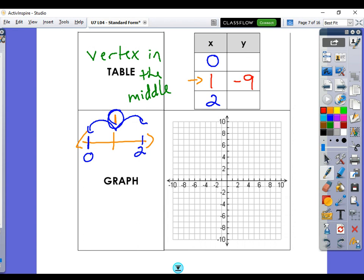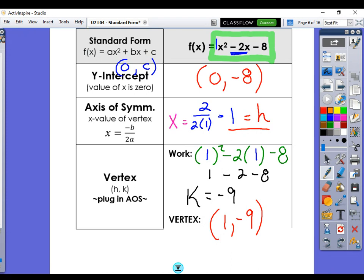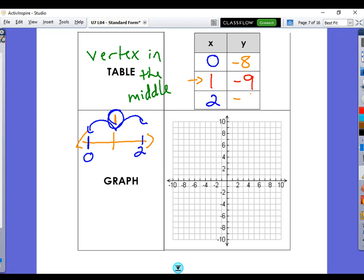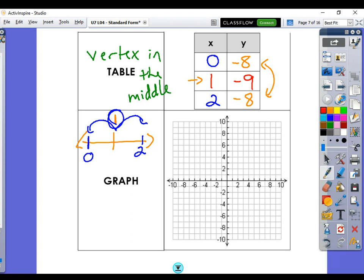So guess what? I don't even have to pick up my pencil. I know that when I plug in 2, I'm going to get negative 8. It's a BOGO deal. These guys are BOGOs. Buy one, get one. It's a BOGO deal, buy one get one free. And now that we have three points, that's enough for me to graph a parabola.